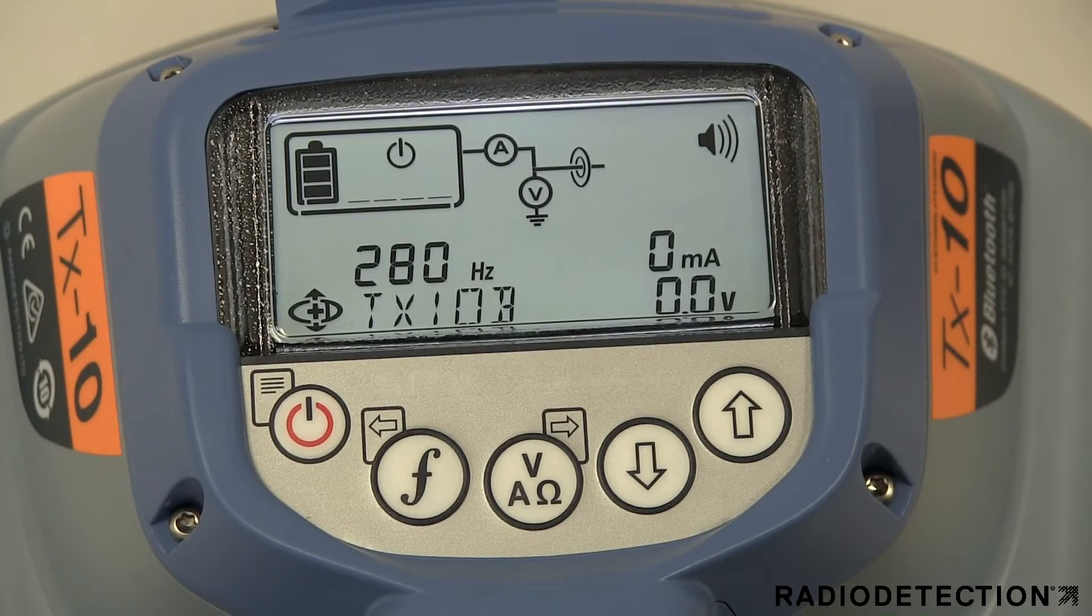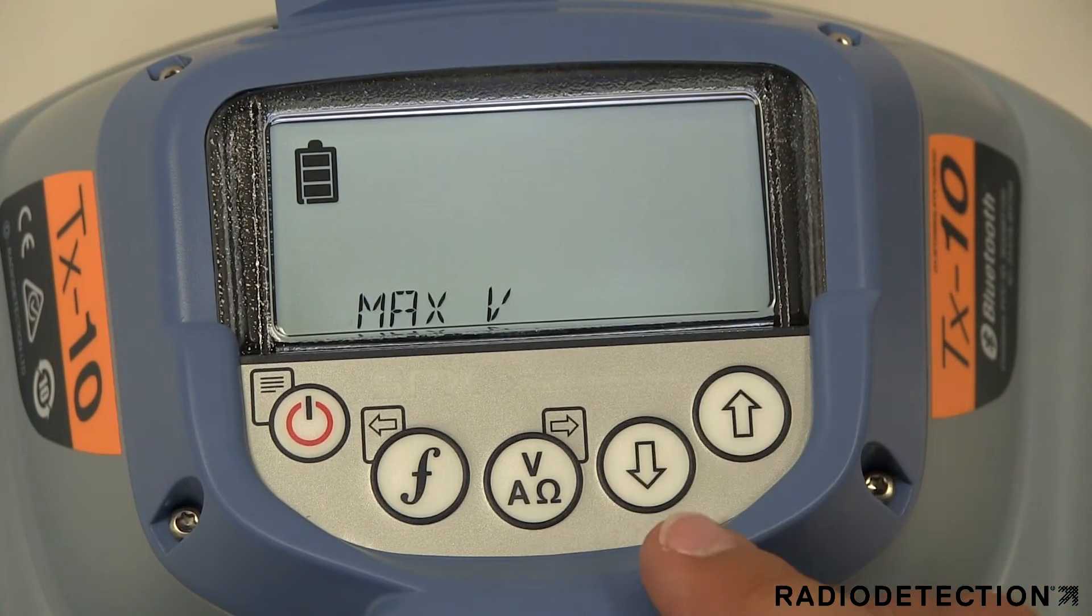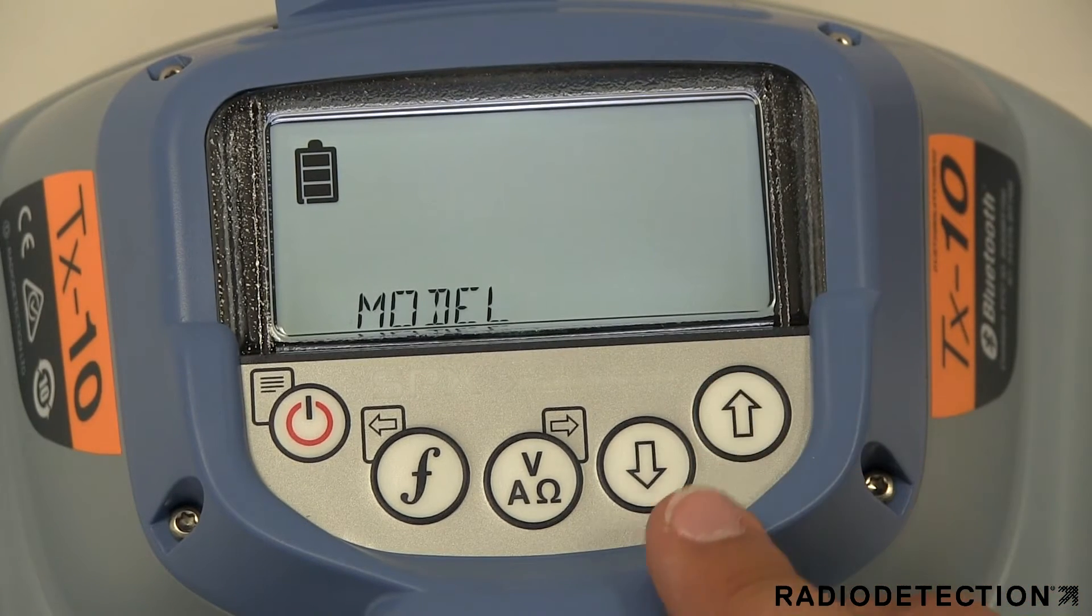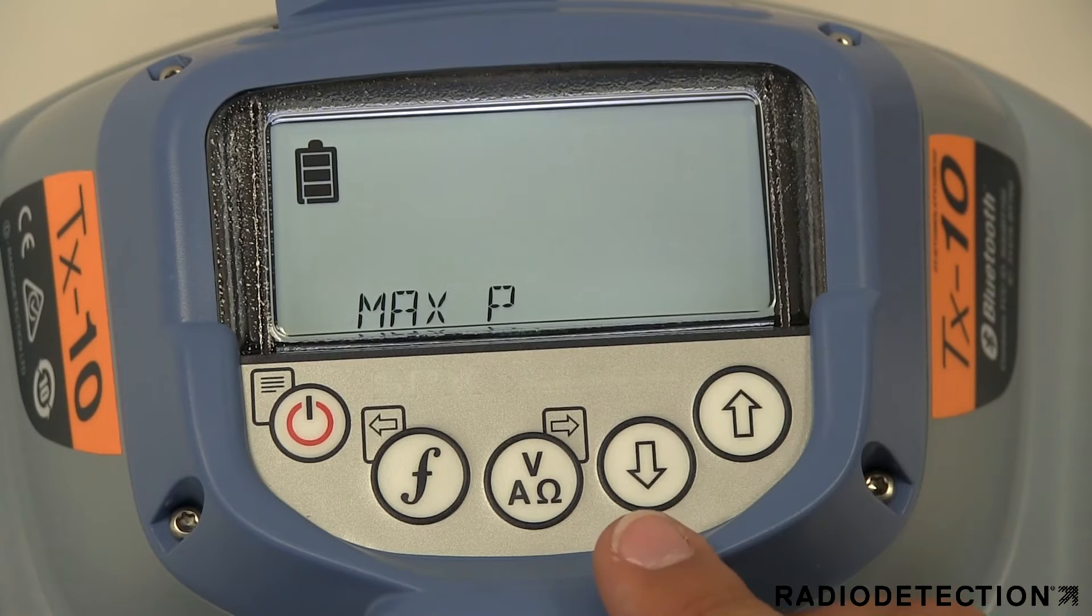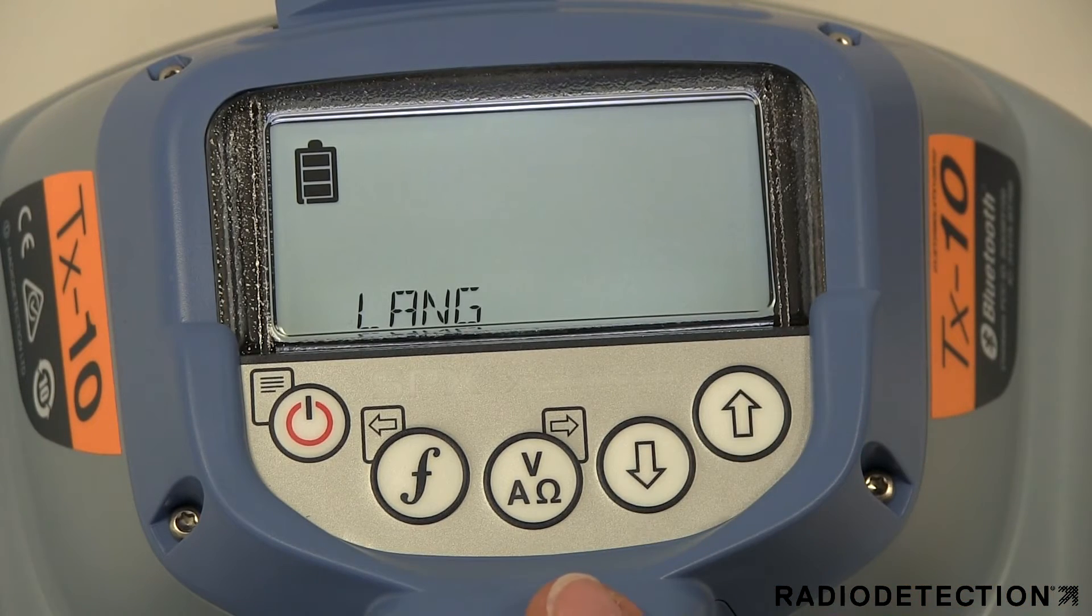The menu items available are volume, Bluetooth, Max V, Model, Max P, Battery, Opt F, Language, Boost and Frequency.